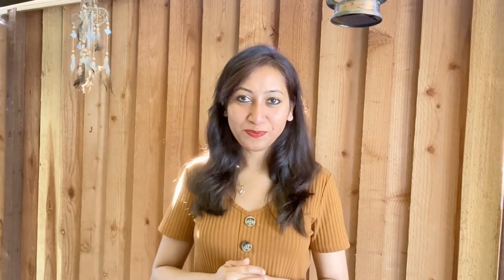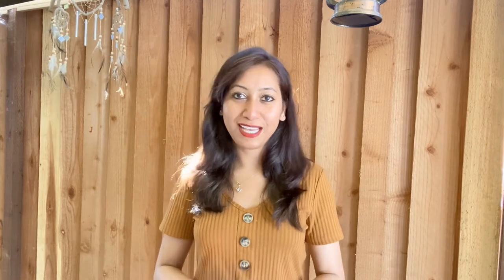Then comes affordances and signifiers. Affordance is a term used to refer to attributes of an object that show the user the action they can take. Signifier refers to any indicator that communicates what affordances objects have. We already have a separate video where we have discussed in detail about affordances and signifiers with the help of examples.